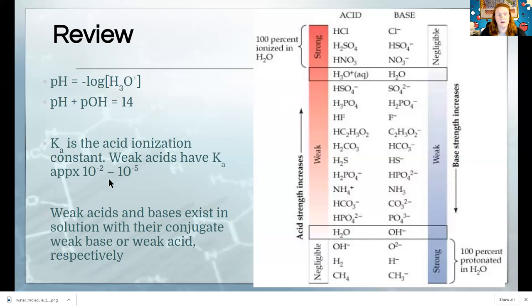A numerical definition for a weak acid is that it has Ka no bigger than like 10 to the negative 2. Anything bigger than that we usually consider to be a strong acid, meaning it dissociates all the way.